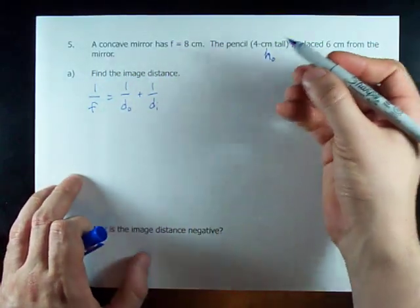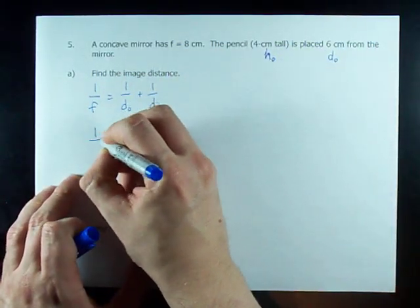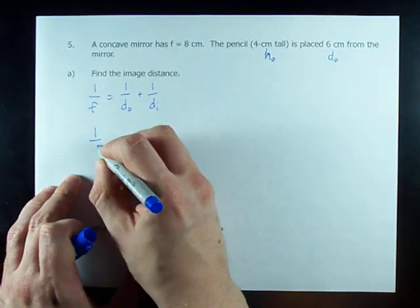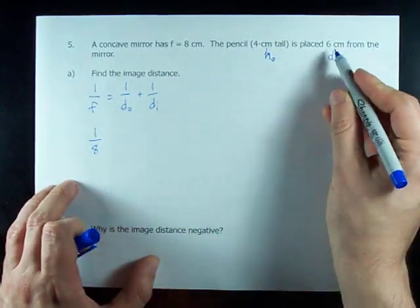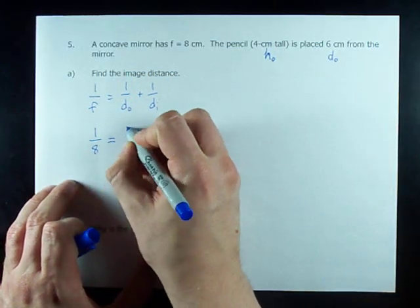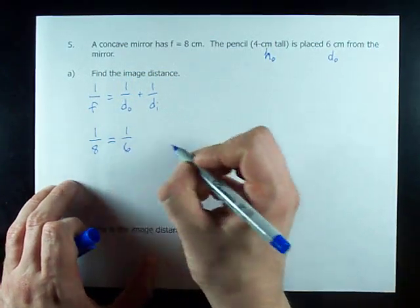Now, all we have to do is fill in some numbers. F is 8, so 1 over F becomes 1 over 8. D_O is 6, so 1 over D_O becomes 1 over 6.